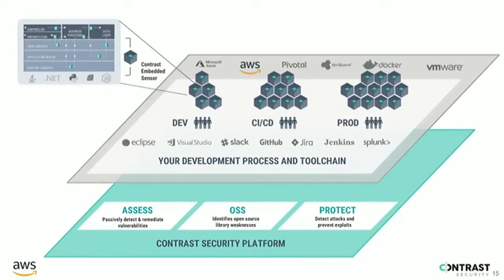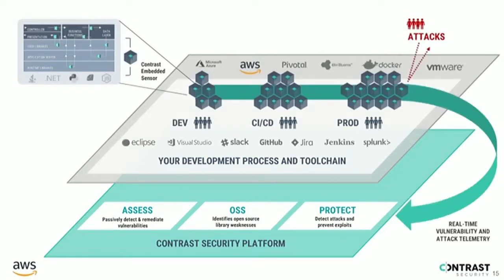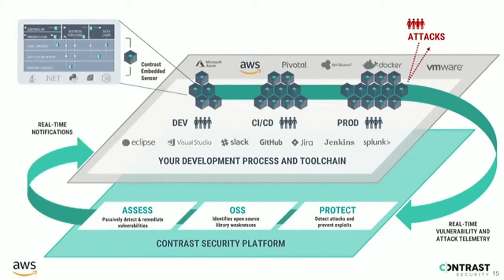All of that is delivered by a technique called instrumentation, where we weave security sensors into the application throughout the entire process. In the top left you see where Contrast can instrument the application to add sensors. Your applications — as they're in the development process, CI/CD process, or as they go into production in AWS — have those sensors built in, constantly feeding information back to the Contrast Security platform. The results, whether it's a new vulnerability in your custom code, a zero day, a vulnerability in an open source library, or a new attack in your production application, are fed right back into the systems and tools the teams use today.